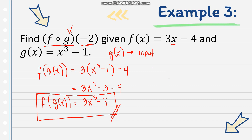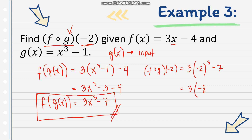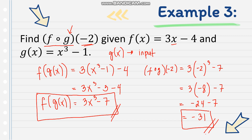Now we evaluate with the given value of x, which is negative 2. So f of g of negative 2 equals 3 times (negative 2) cubed minus 7. Negative 2 cubed is negative 8, so 3 times negative 8 is negative 24, then minus 7. Therefore, the final answer is negative 31.